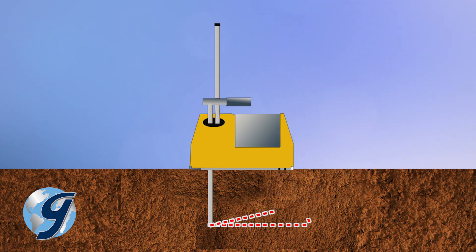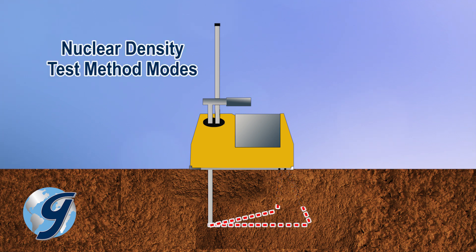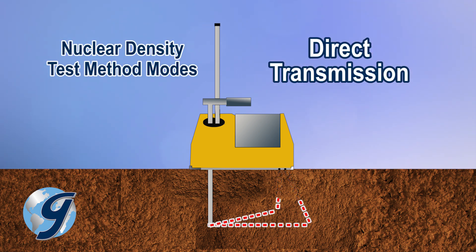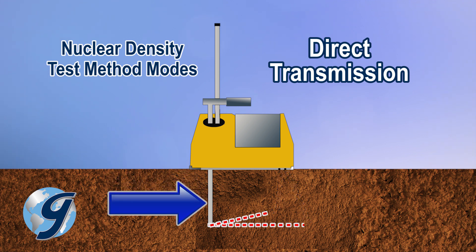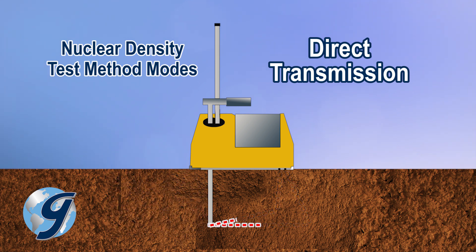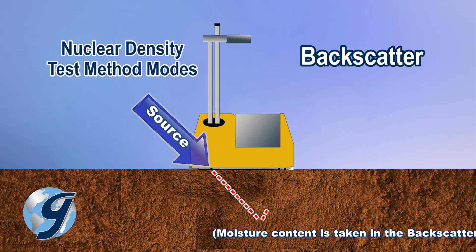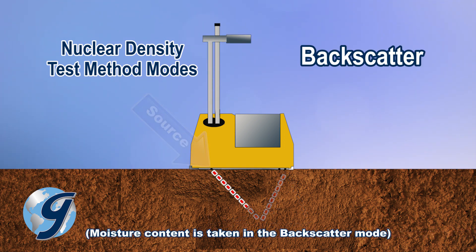Nuclear density gauges are typically operated in one of two modes: the more reliable direct transmission mode, where a retractable rod is lowered into a pre-drilled hole, or the backscatter mode, where the rod stays within the instrument.